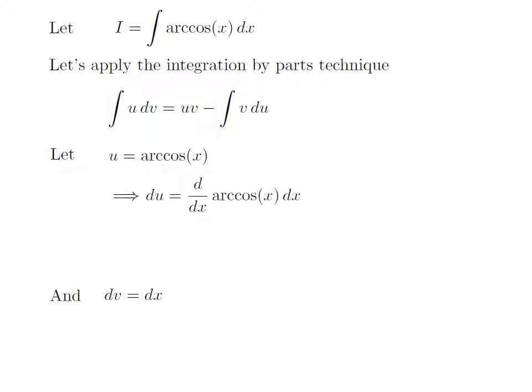We need to find out the value of differential of u. As u is equal to arccos(x), this implies that the differential of u is equal to the differentiation of arccos(x) with respect to x, into differential of x. The derivative of arccos(x) with respect to x is minus 1 divided by the square root of 1 minus x squared.